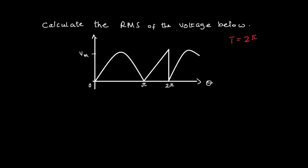First, I am going to calculate the squared area of the sine part. The function for the sine part, f(θ), is given as Vm·sin(θ). So we have to find the squared area of the sine part.